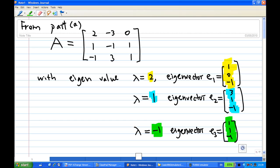Then we know that if eigenvalue is equal to 2, then the eigenvector is 1, 0, minus 1. If the eigenvalue is 1, we have the eigenvector E2 is 3, 1, minus 1.